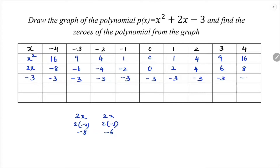Now add these three values to get y. When x = minus 4: 16 + (minus 8) + (minus 3) = 16 minus 11 = 5. When x = minus 3: 9 + (minus 6) + (minus 3) = 9 minus 9 = 0. When x = minus 2: 4 + (minus 4) cancels, leaving minus 3.